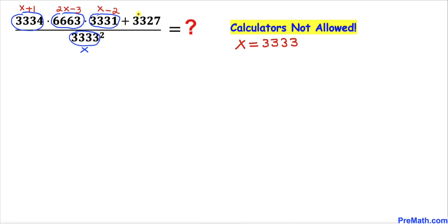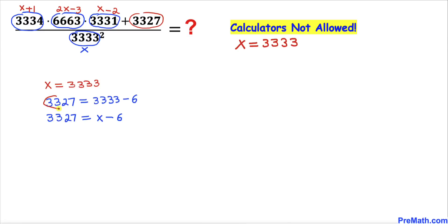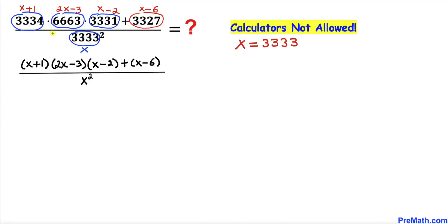Finally, let's focus on 3327. If we simplify this, it turns out to be x minus 6. So I am going to replace 3327 with x minus 6. In the next step I have brought down x plus 1 and 2x minus 3, and now let's go ahead and multiply these first two binomials.